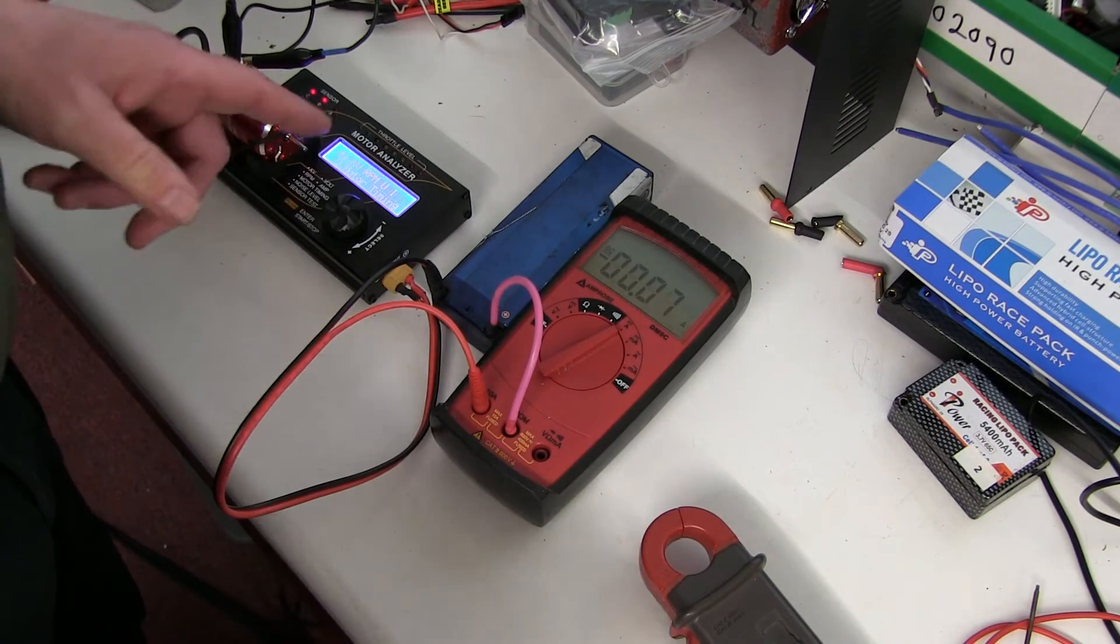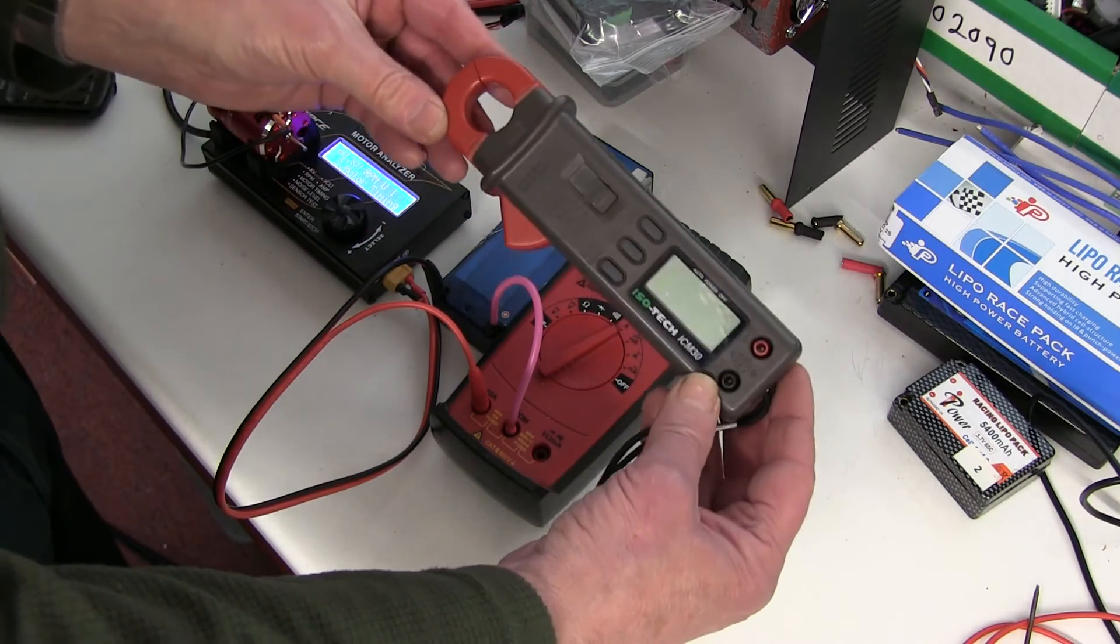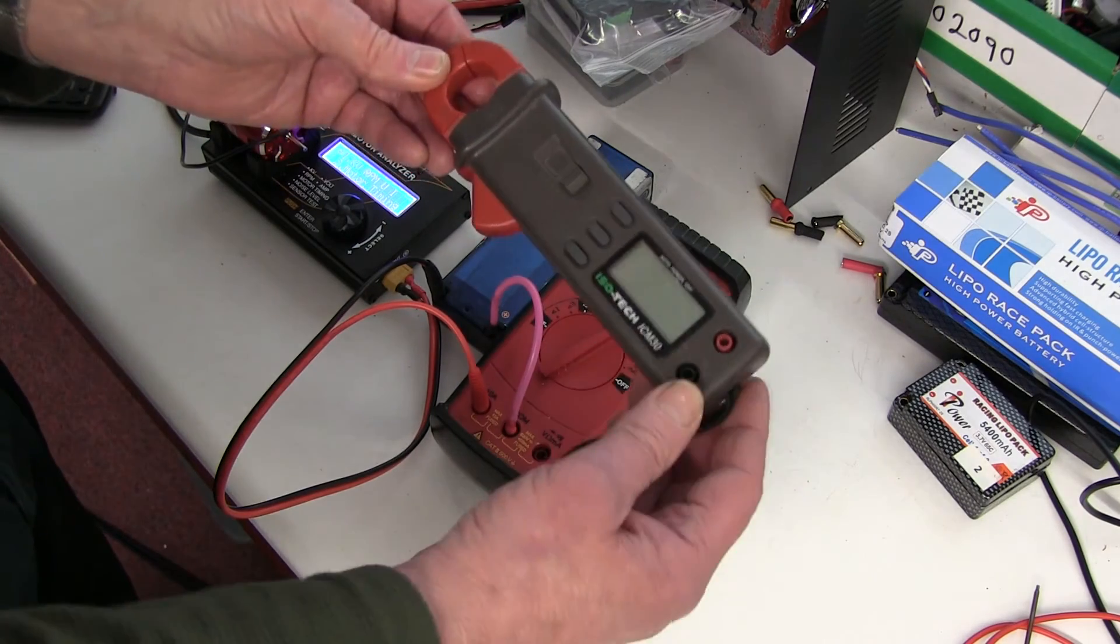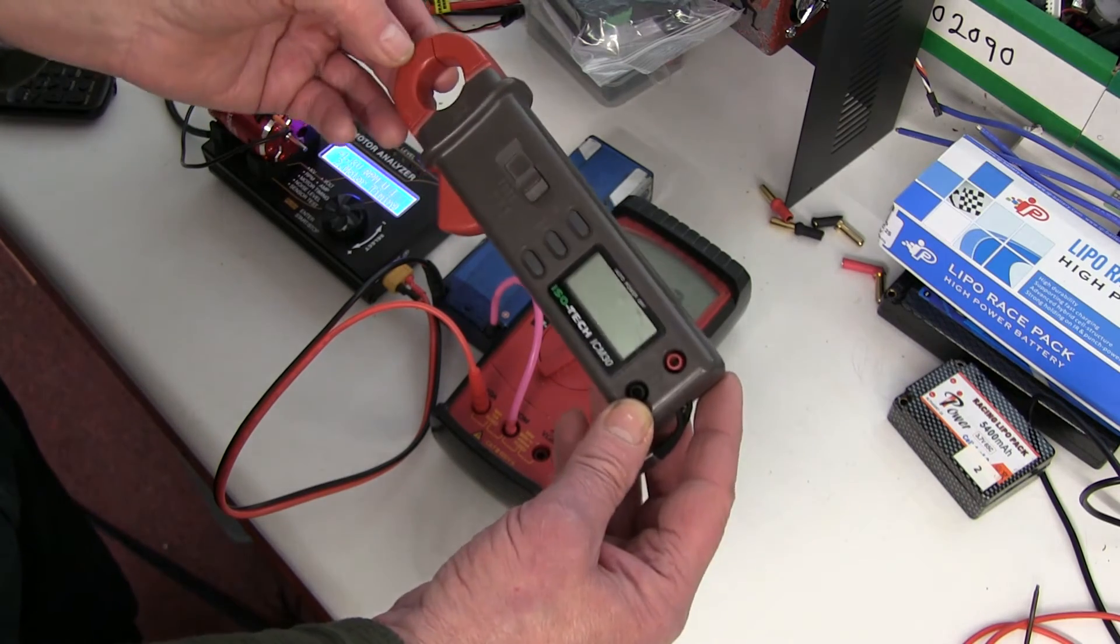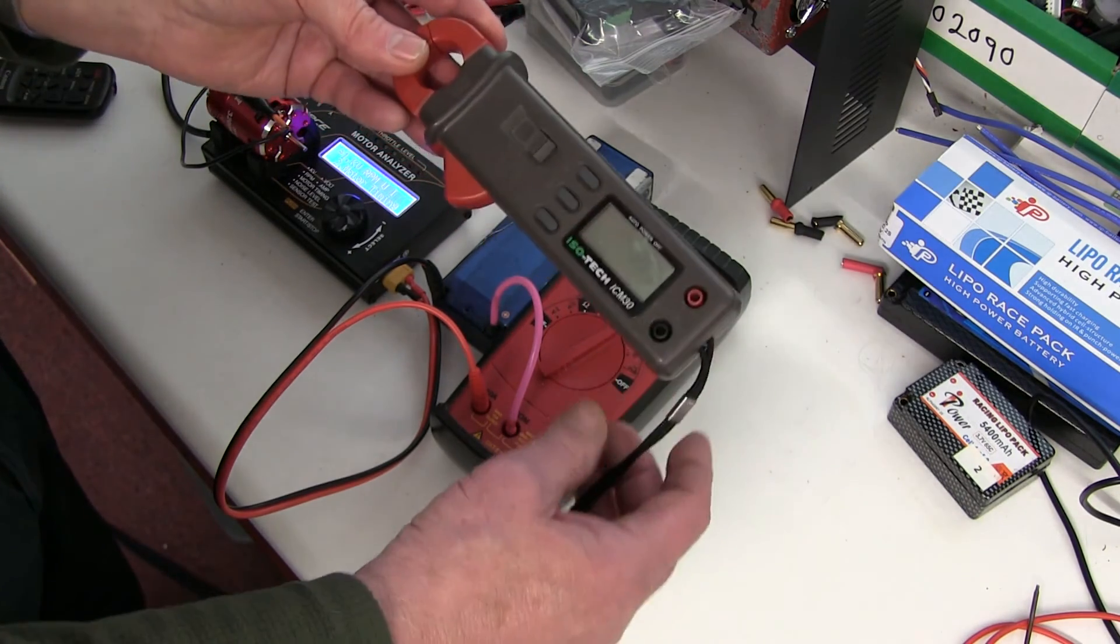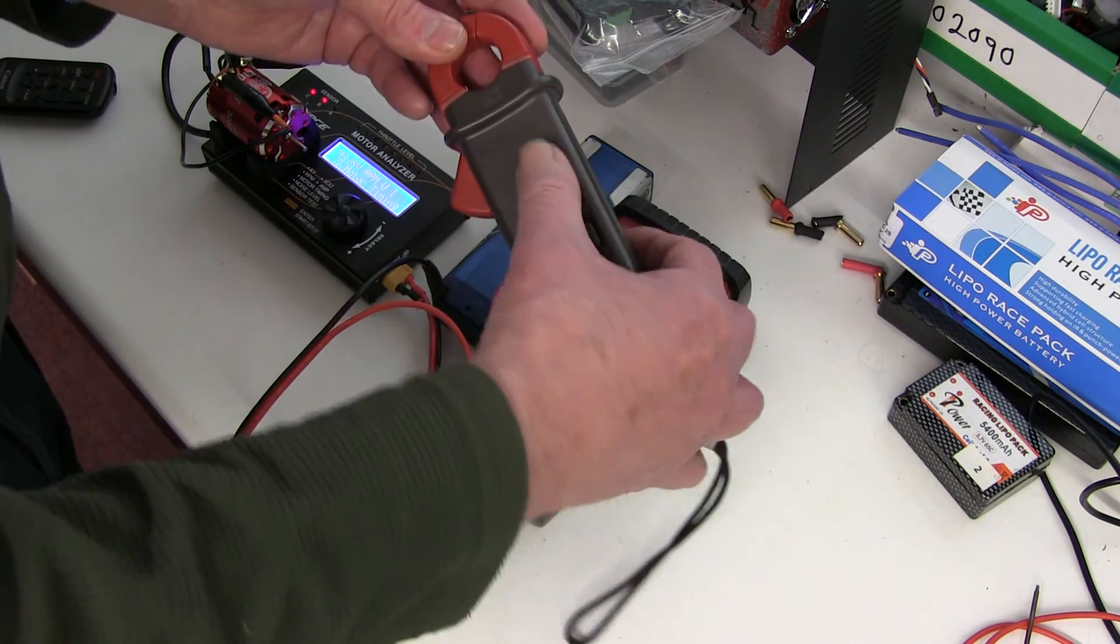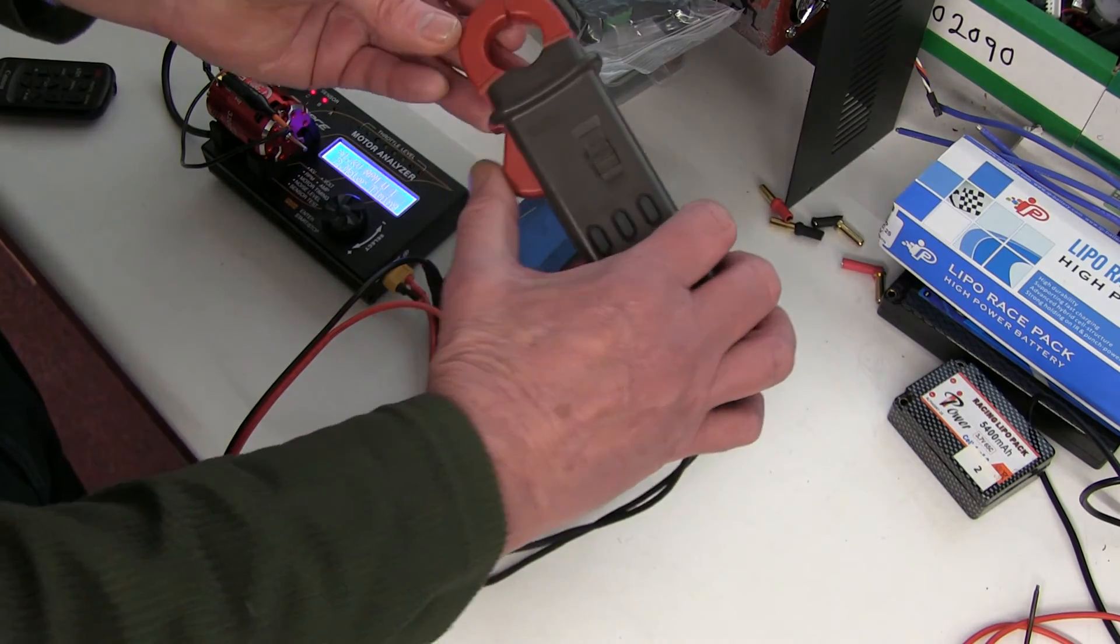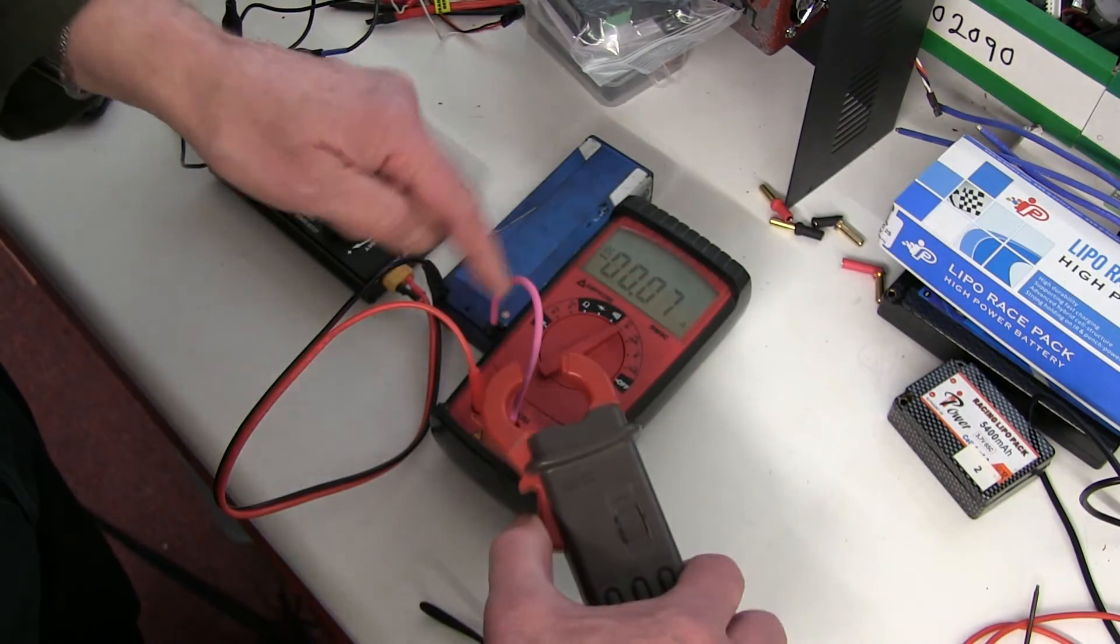Now another type of meter you can buy is this thing called a clamp meter. Now these used to be very expensive but now I've seen them very cheap being sold. You need one that does DC not AC and does amps. You can set it to amps and it's got jaws which open and you just put it around one of the wires.